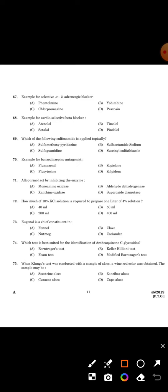Second question: Example for Cardioselective Beta Blocker. The answer is Option A, Atenolol.